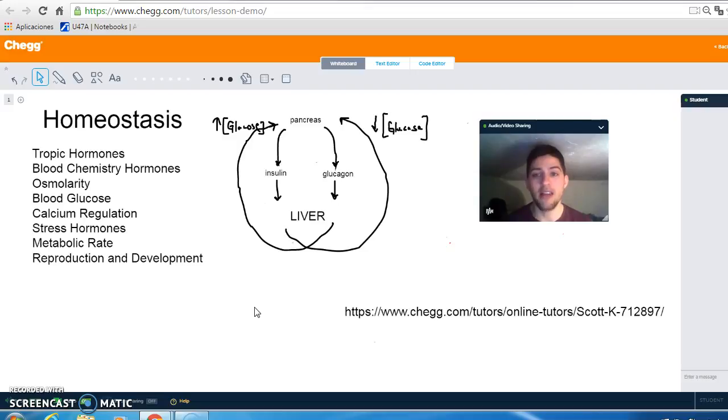Endocrine glands tend to oversecrete their hormones. Typically, some aspect of their effect on the target tissue will inhibit this secretion. And this is exactly the example of negative feedback inhibition.